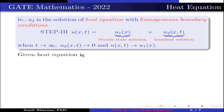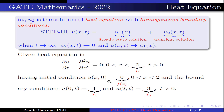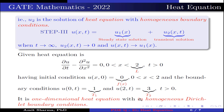Now, the given heat equation is ∂u/∂t − ∂²u/∂x² = 0, where 0 < x < 2, so l = 2 and t > 0. The initial condition u(x, 0) = 0 implies f(x) = 0 for 0 < x < 2. The boundary conditions are u(0, t) = 1, so T₁ = 1, and u(2, t) = 3, so T₂ = 3, where t > 0. This is a 1D heat equation with inhomogeneous Dirichlet boundary conditions.